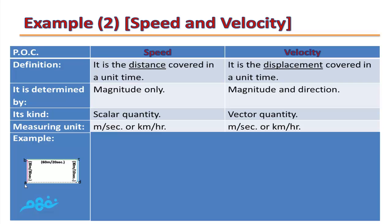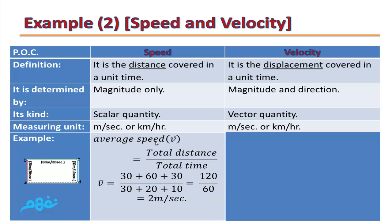Here is an example: a car moves from A to B, a distance of 30 meters in 30 seconds, then from B to C, 60 meters in 20 seconds, then from C to D, 30 meters in 10 seconds. To calculate the average speed, we divide the total distance by the total time. Total distance = 30 + 60 + 30 = 120 meters. Total time = 30 + 20 + 10 = 60 seconds. So the average speed of this car is 2 meters per second.